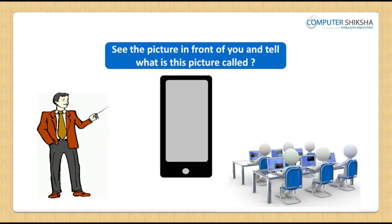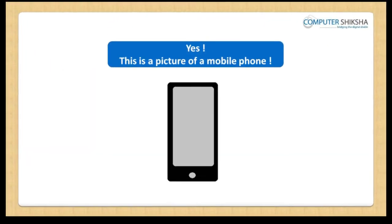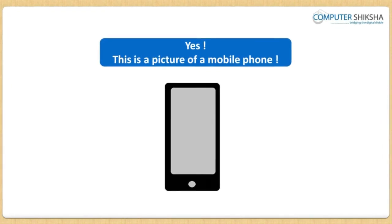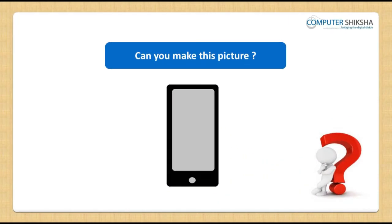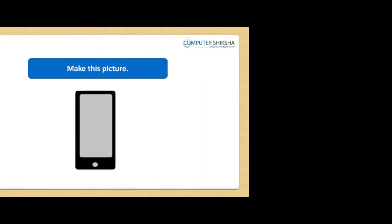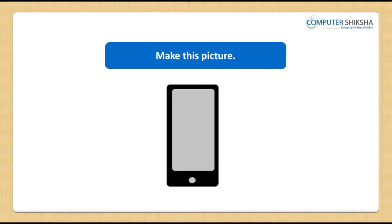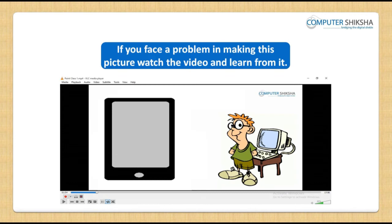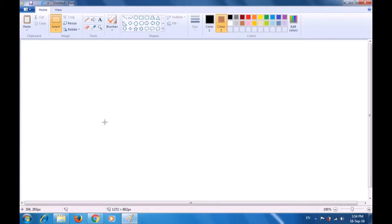See the picture in front of you and tell what is this picture called? Yes, this is a picture of a mobile phone. Can you make this picture? Make this picture and in case you face a problem, watch the video. With the help of this video, let us see how we can use the Rounded Rectangle Tool to make this nice picture of a mobile.